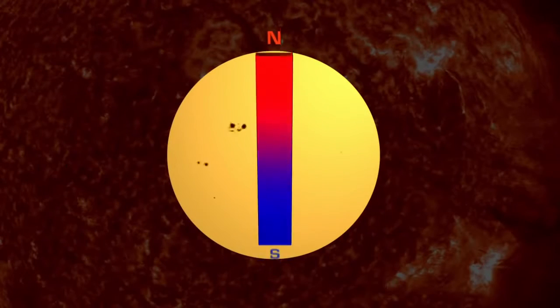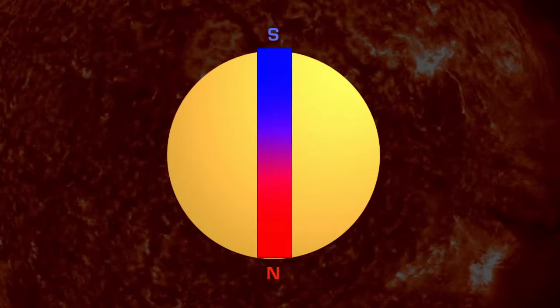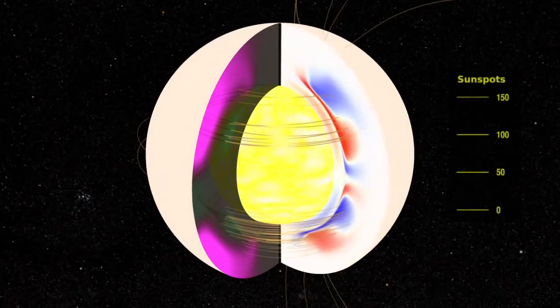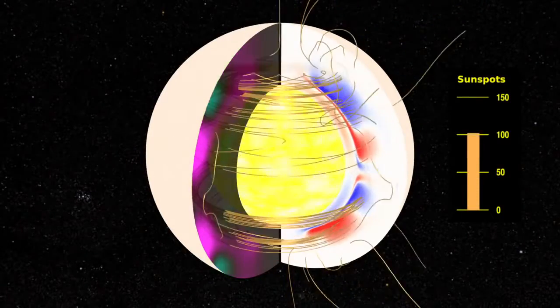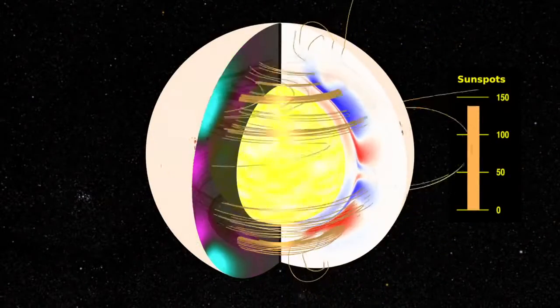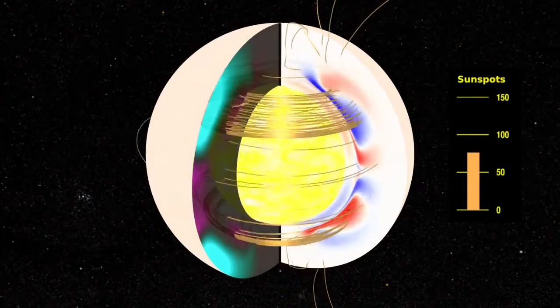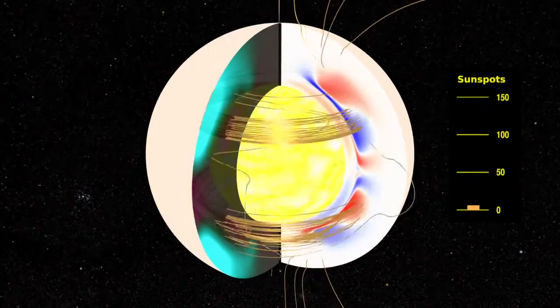Every 11 years, the Sun's poles flip. North becomes south, and south becomes north. So every 22 years, the poles return to the position where they started the cycle. The flip is due to the complex movement of magnetic fields inside the Sun that are constantly stretching, twisting, and crossing as solar material bubbles up from the Sun's core. But the exact pattern of movements is not yet mapped out.